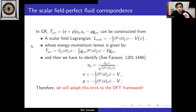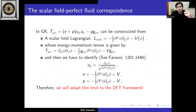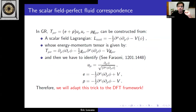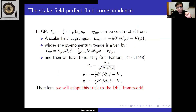The key trick for constructing the energy-momentum tensor is the scalar-field perfect-fluid correspondence: in GR, starting with a scalar field and making identifications in terms of hydrodynamic variables — velocity, energy density, and pressure — one obtains the energy-momentum tensor for a perfect fluid via a formal correspondence.